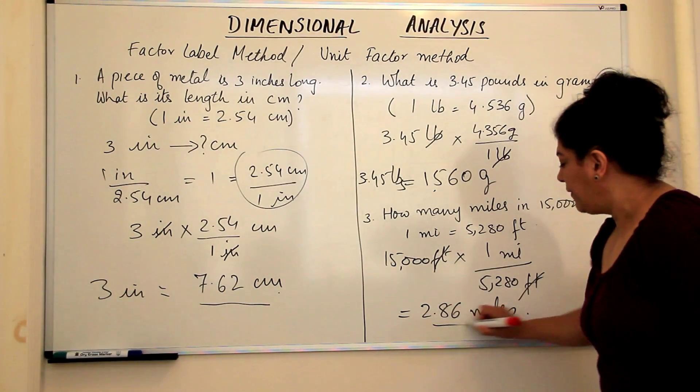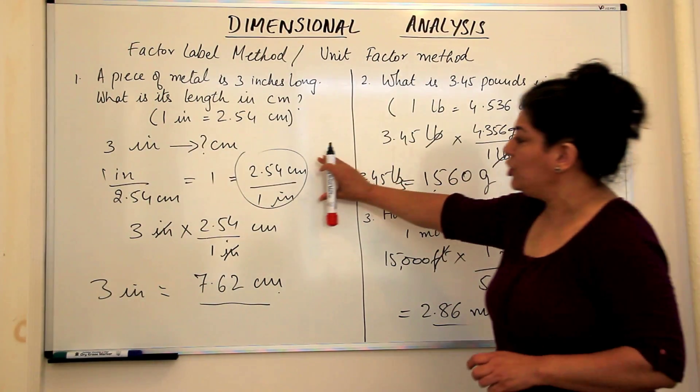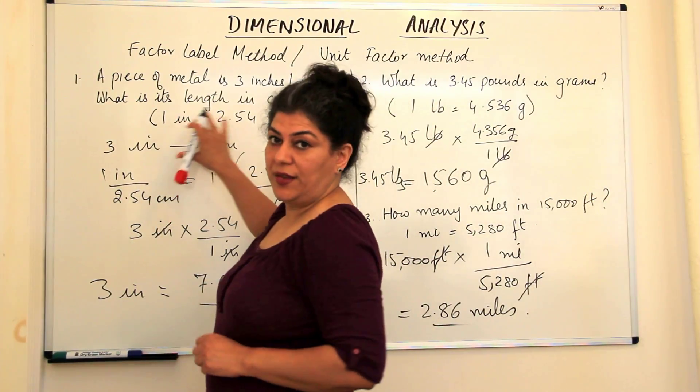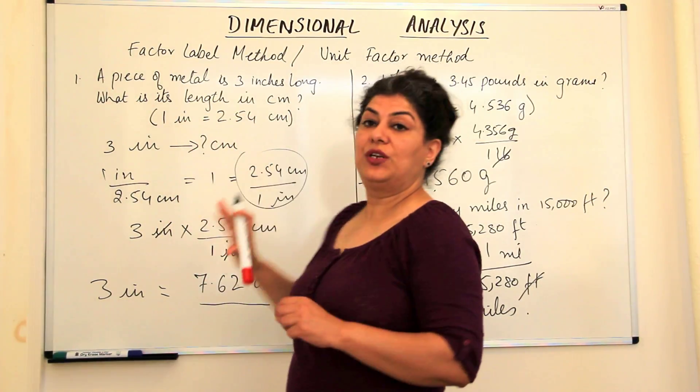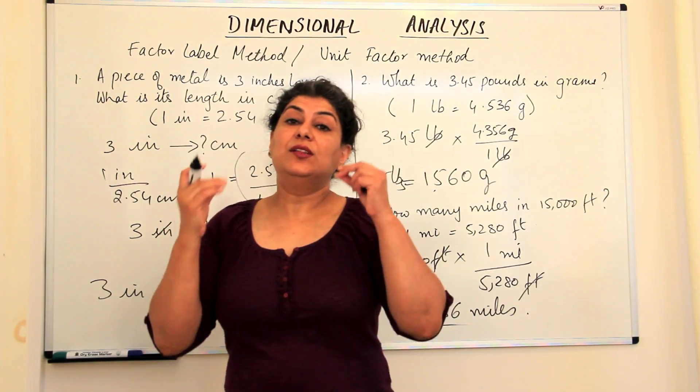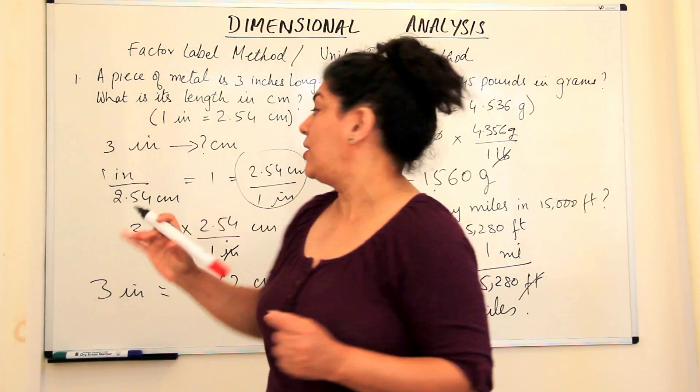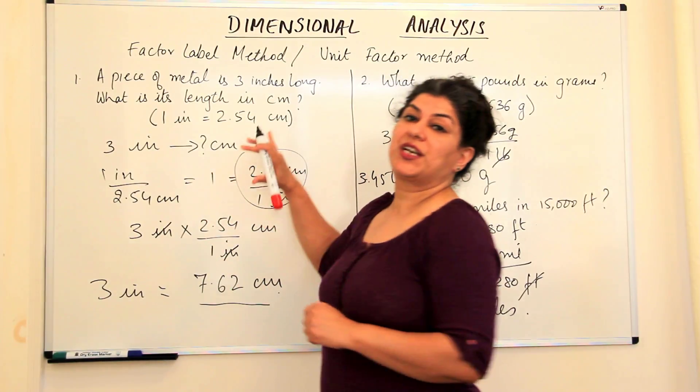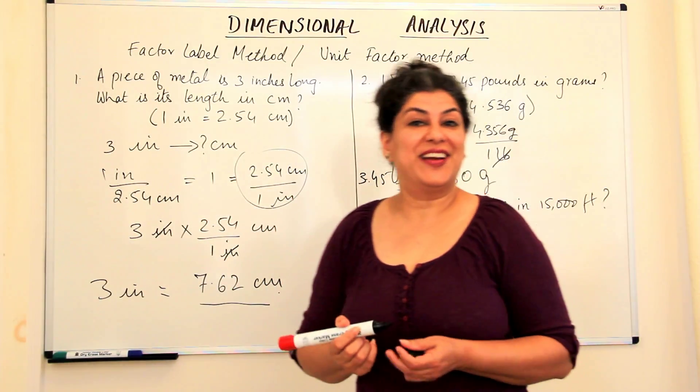So do you see how we carry out the conversion? We make unit factors of the conversion that is given to us, and we use the unit factor in such a way that the one that has to be cancelled out comes in the denominator, and automatically the unit that you want comes in the numerator and you get the correct answer.